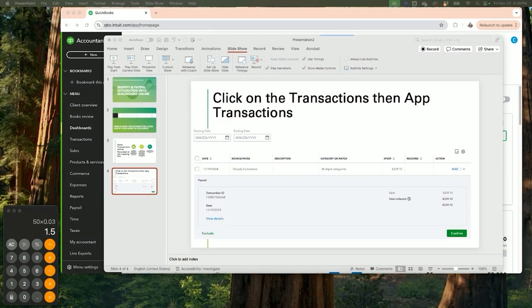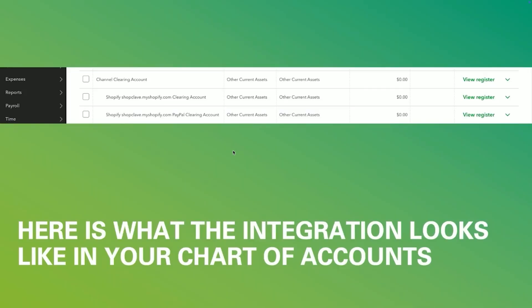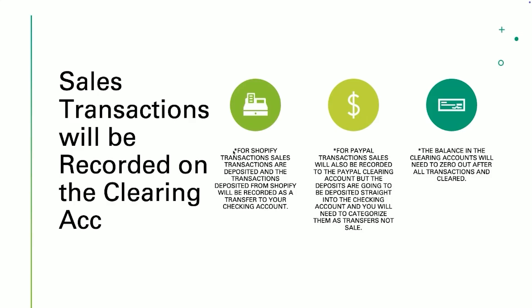We're going straight to our presentation and then we'll jump to a QuickBooks sample account. So — Shopify and PayPal integration with QuickBooks Online. When you look at the chart of accounts by clicking on Transactions on the left-hand side menu and going to Chart of Accounts, it works like undeposited funds — all sales are deposited into clearing accounts. For Shopify transactions paid by credit card, they go to a regular clearing account; for those paid with PayPal, they go to a PayPal clearing account.